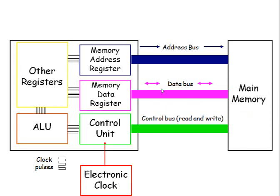One thing you also need to note is the width of the data bus, which is usually called the word size. That is the total number of bits which the processor can handle in a single operation. If you were to increase the width of the data bus you would improve the performance of the computer system because it's capable of carrying more data per clock cycle.